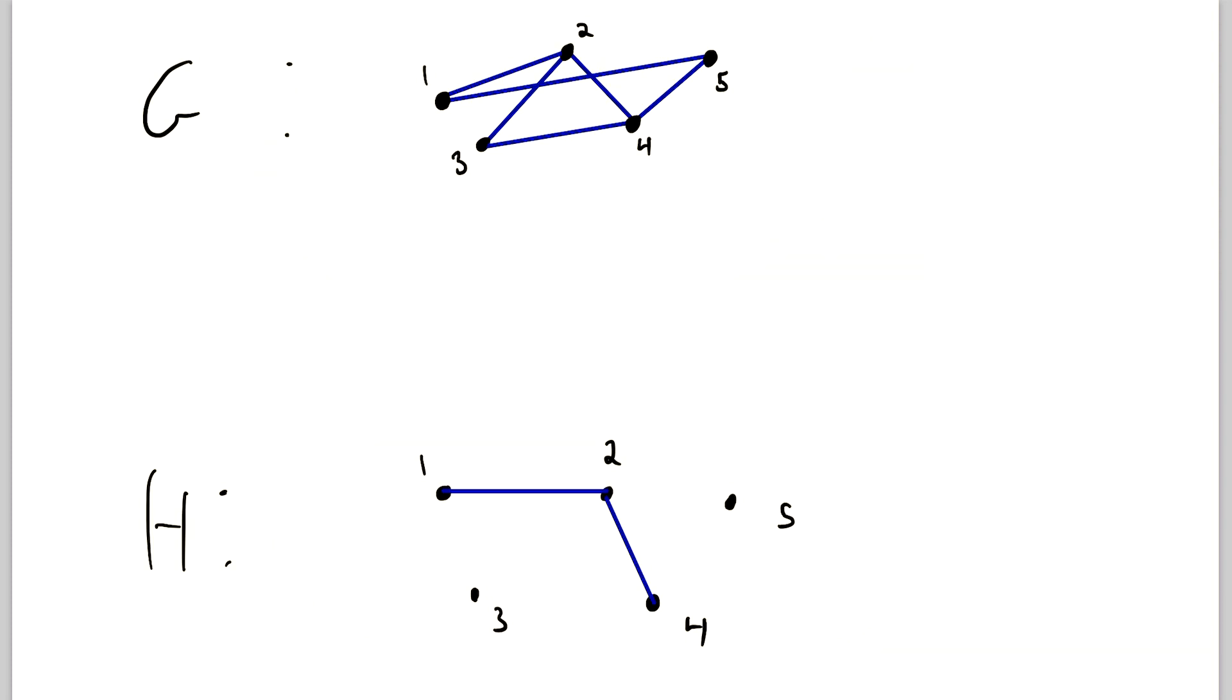And of course we could also add some of the edges here. So if we connected 1 to 5, H is still a spanning subgraph of G because again, it's a subgraph with an equal vertex set. But if we were to say join 1 and 4, then H is no longer a spanning subgraph of G because in G, 1 and 4 are not joined by an edge. So in this case, it's no longer a subgraph. So it can't be a spanning subgraph.